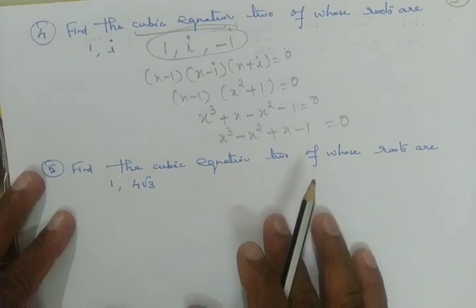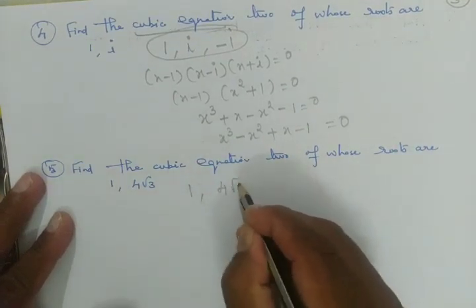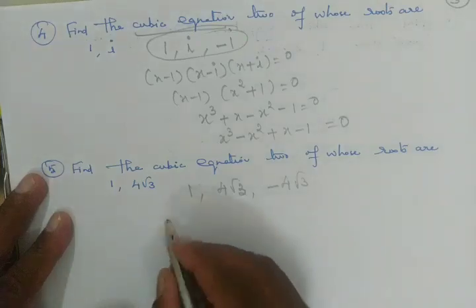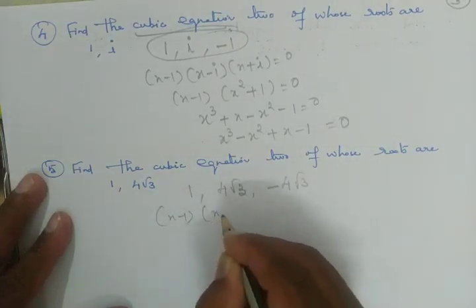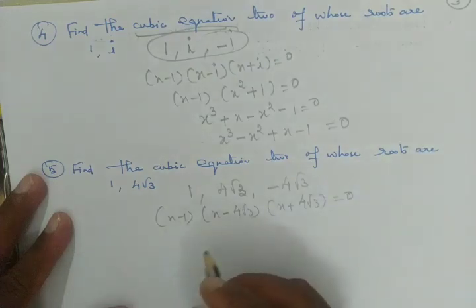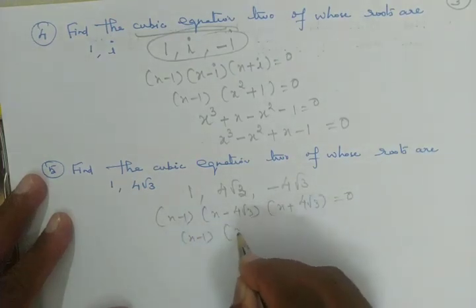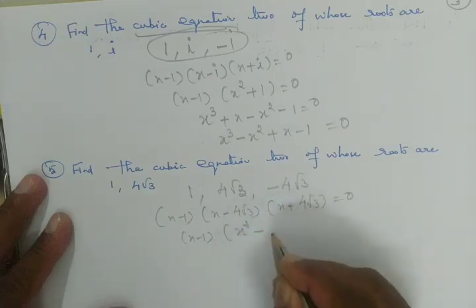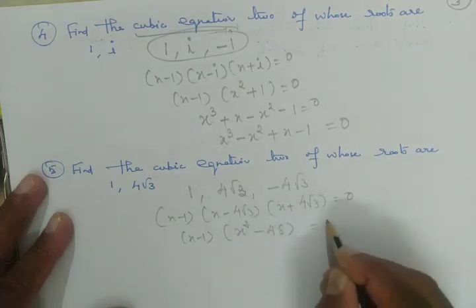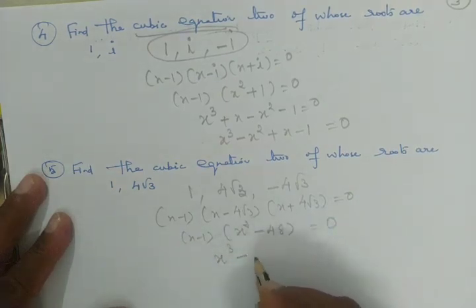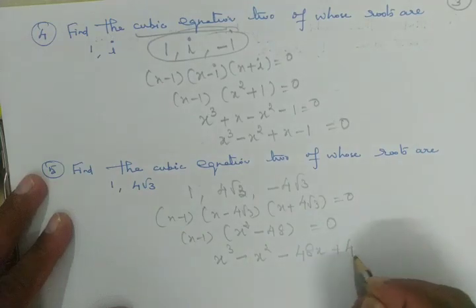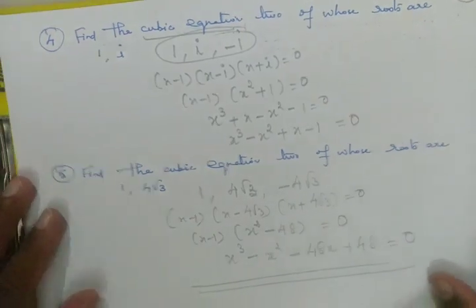Next, given roots 1 and 4√3. Since 4√3 is irrational, the conjugate root is -4√3. So we write (x-1)(x-4√3)(x+4√3) = 0. Multiplying: (x-1)(x²-48) = 0, since (4√3)² = 16×3 = 48. Expanding: x³ - x² - 48x + 48 = 0. This is the required equation.